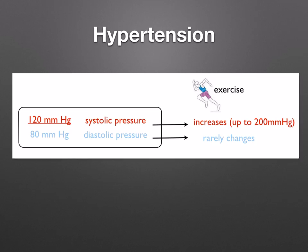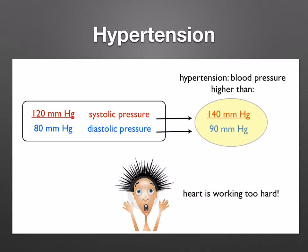Hypertension is the term used to describe sustained high blood pressure when at rest. It is normal for blood pressure to increase temporarily during and after exercise. Hypertension is not always easy to define as there is much individual variation in normal blood pressure depending on age, general health, and degree of activity. It is the systolic pressure that changes with exercise; the diastolic pressure rarely changes. Hypertension is when the blood pressure is higher than about 140 mmHg over 90 mmHg, indicating that the heart is working too hard.